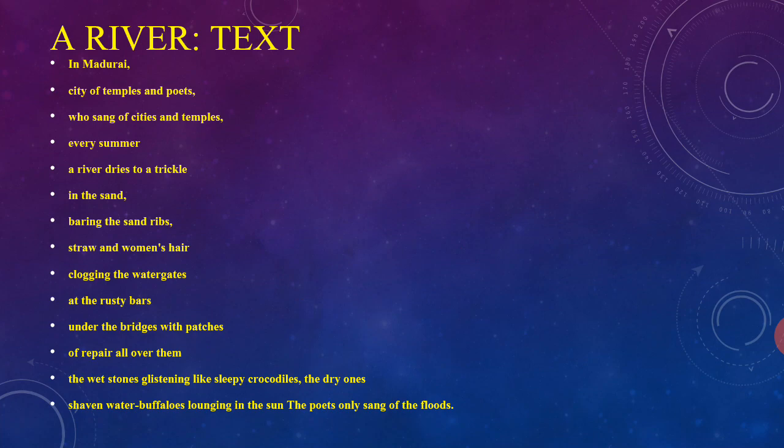The poet himself has portrayed the picture of the dry river. He says one can easily see the sand ribs and straw and women's hair clogging the water gates at the rusty bars under the bridges with patches of repair all over them.